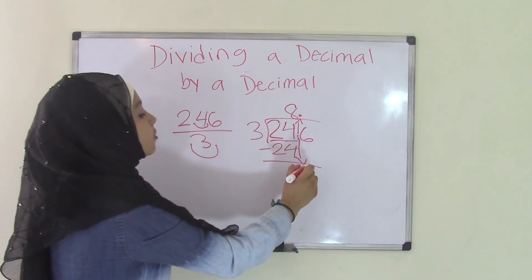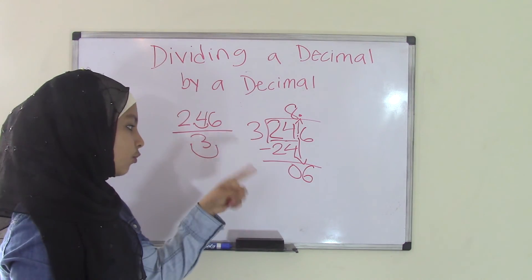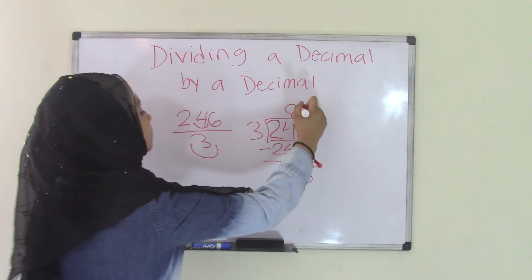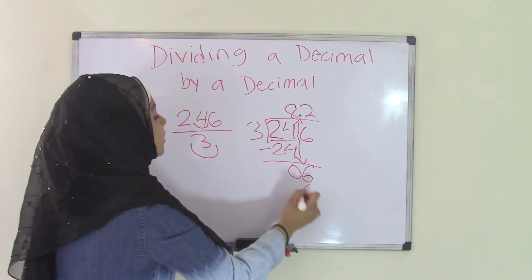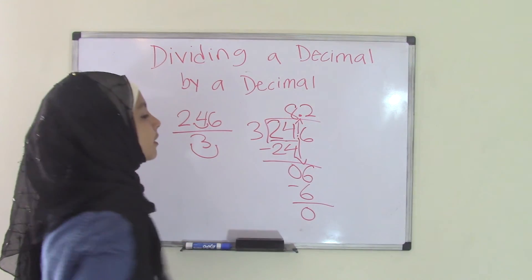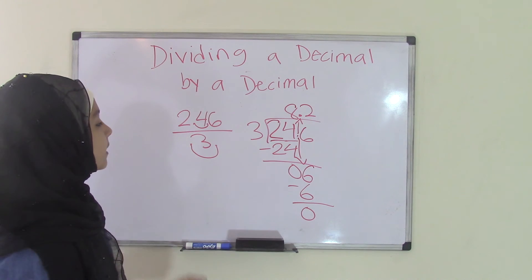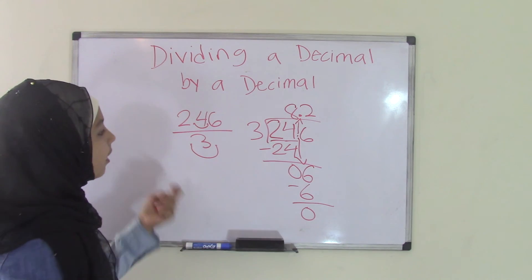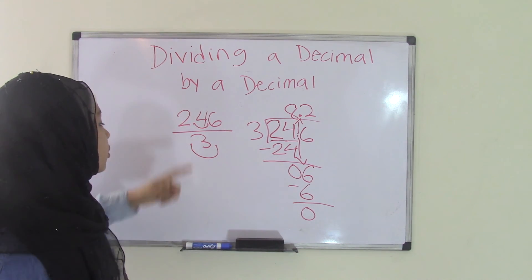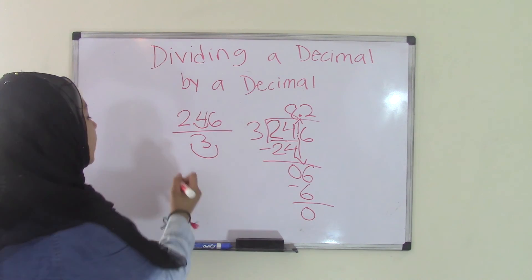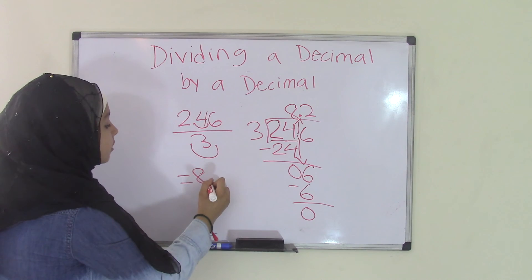Now what we're going to do is we're going to bring down the 6. How many times does 3 go into 6? 2 times. So 3 times 2 equals 6. And we got a 0 as our remainder. So that means we don't really have a remainder. The quotient of 2.46 divided by 0.3, which was our original problem, equals 8.2.